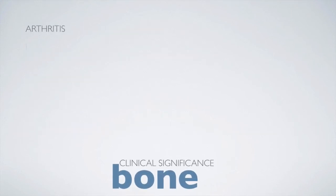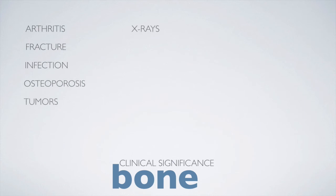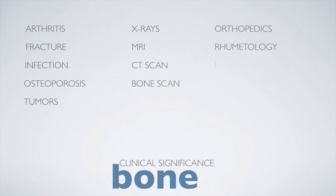Diseases can affect bone, including arthritis, fractures, infections, osteoporosis, and tumors. Bones are often imaged through radiography, which might include ultrasound, CT scan, MRI scan, or bone scan. Conditions relating to bone can be managed by a variety of doctors such as a rheumatologist, orthopedician, physiotherapist, radiologist, pathologist, or physician.